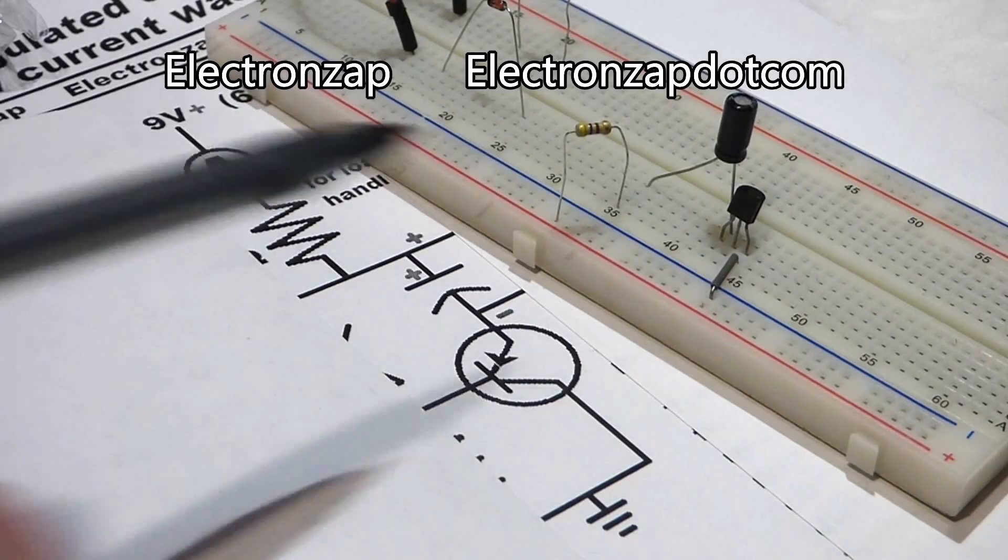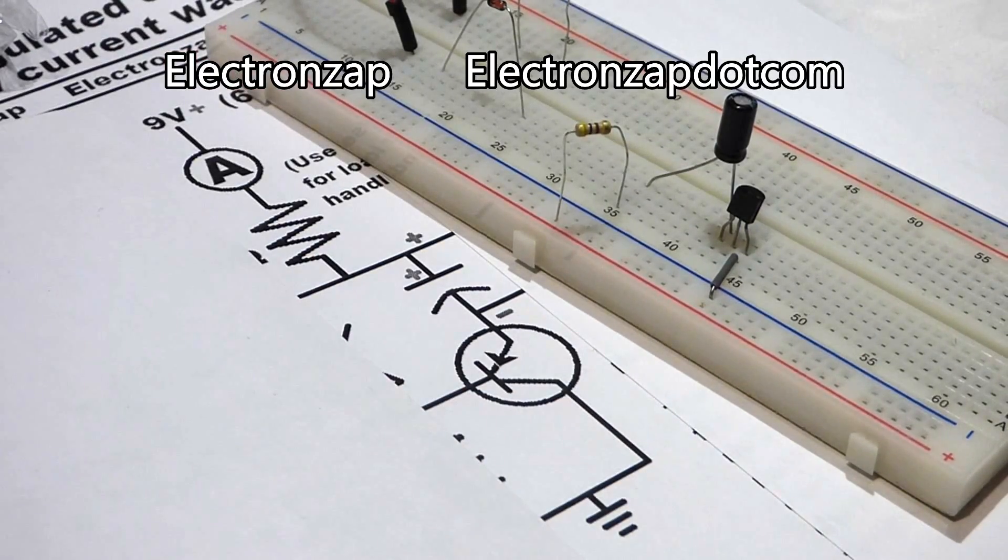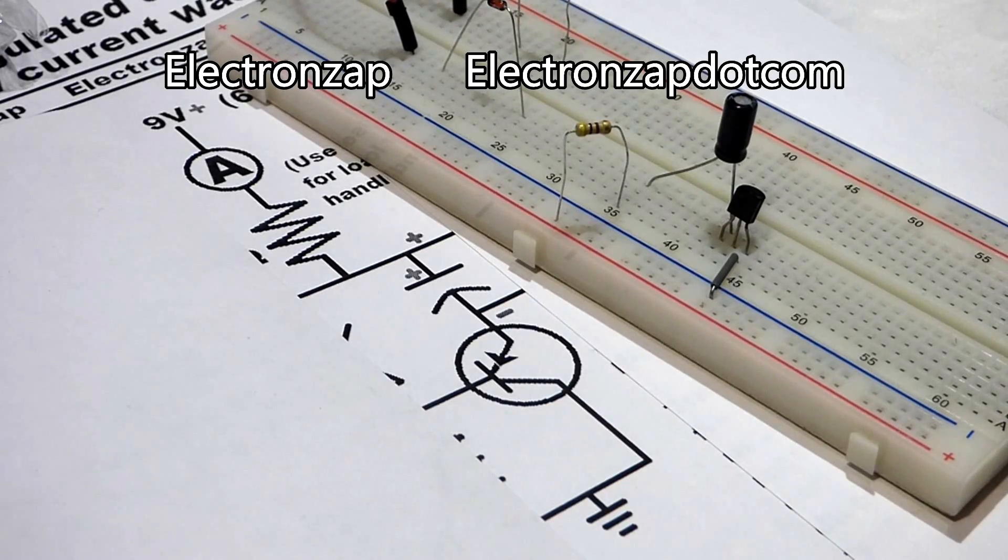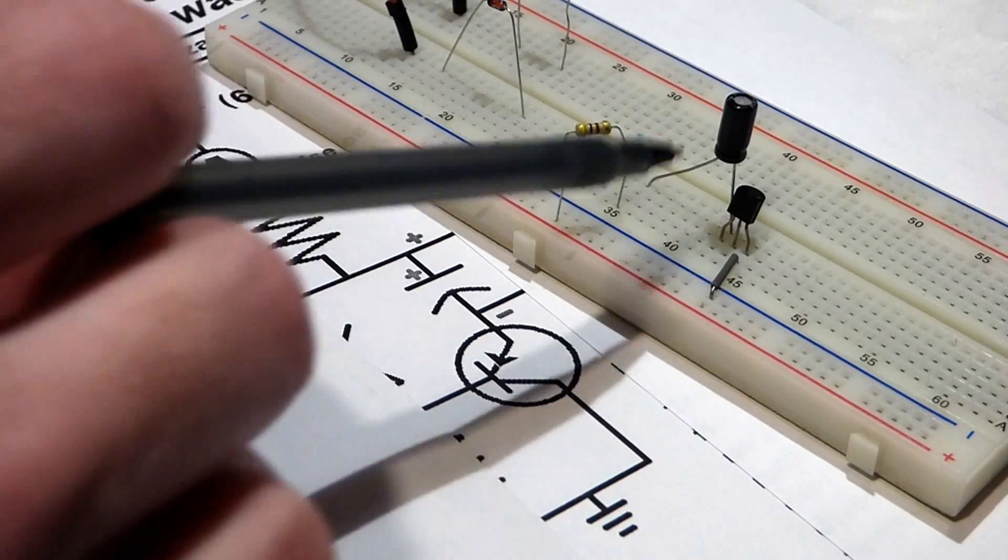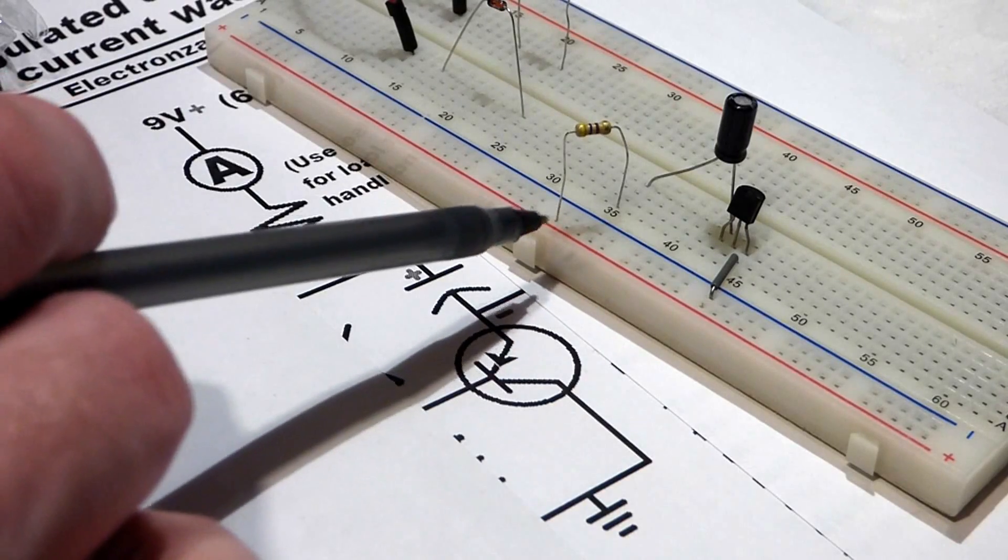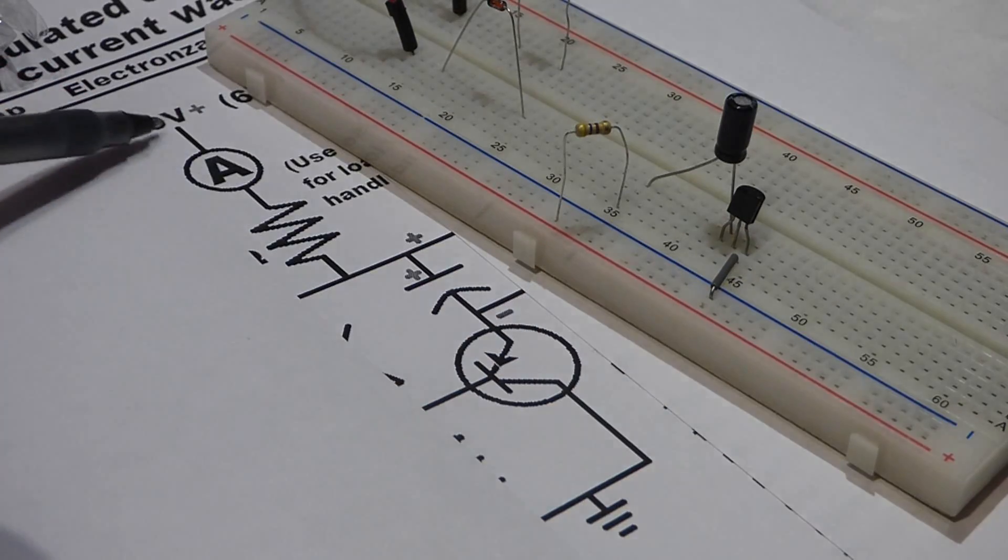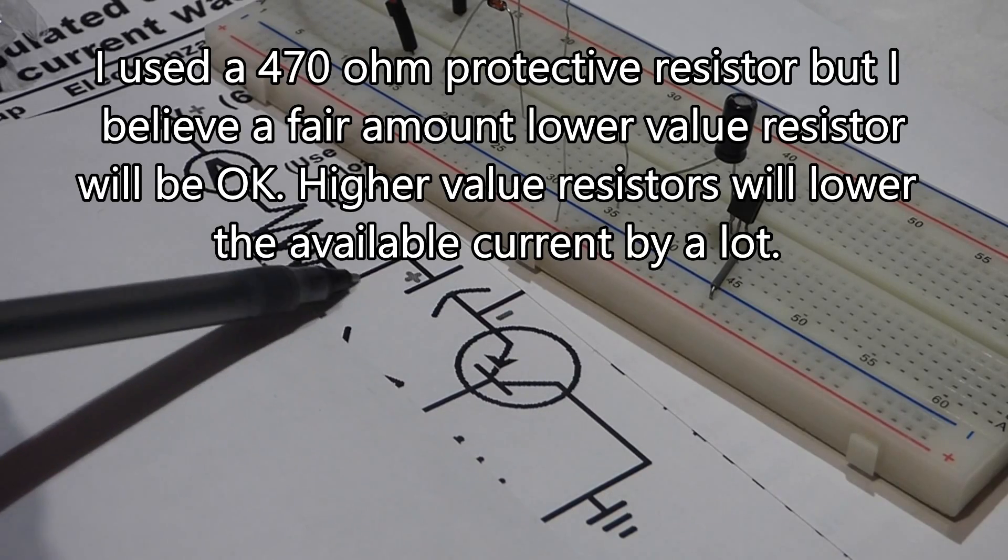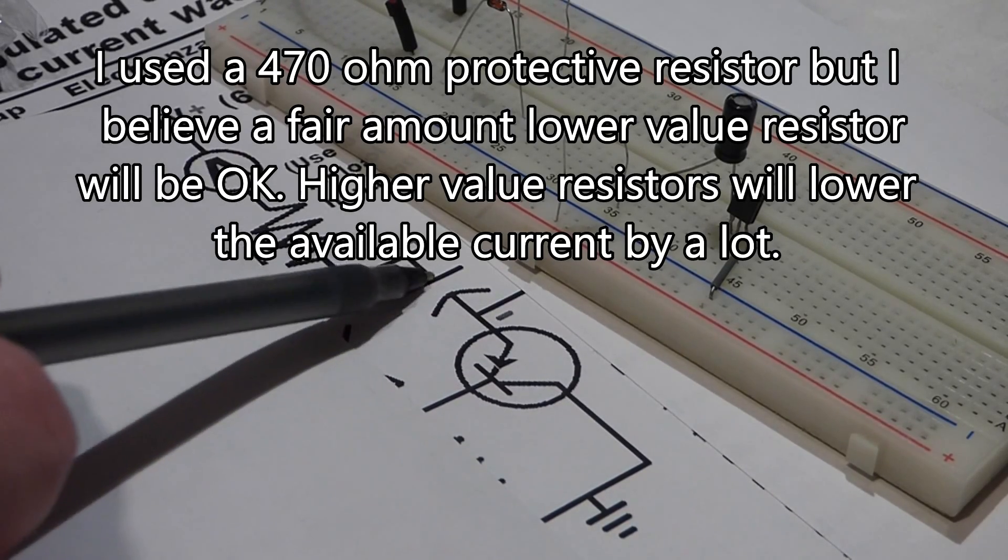The ultimate goal of this circuit is to charge this capacitor to 5 volts, no matter what the voltage of the power source is above 5 volts. To begin, we're going to have this circuit where we connect positive here through a protective resistor to limit the current and give a positive charge to this side of the capacitor.